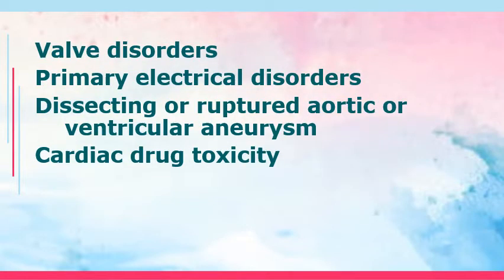Then you have valve disorders — one example is mitral valve prolapse. Then primary electrical disorders, which are your dysrhythmias. Then dissecting or ruptured aneurysm — an aneurysm is an outpouching in your blood vessel with a high risk for rupture, especially if the patient is hypertensive. Then cardiac drug toxicity — a common example is digoxin.